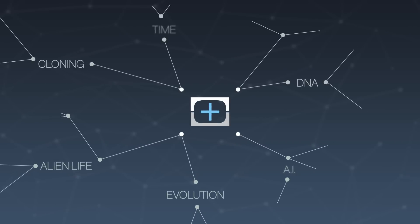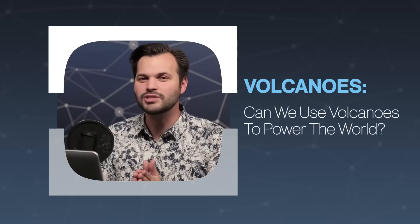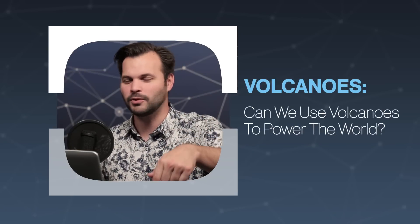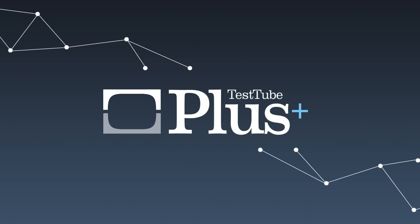Hey everyone, thanks for tuning in to TestTube Plus again today. I'm Trace. This is episode 4 of 5 on volcanoes. If you haven't subscribed yet, just take a second and click the little button down there. Also, go back and watch the first three episodes in this series because you don't want to miss how volcanoes form, where they form, what's up with their explosions, and all sorts of cool stuff about mythology and how it informs modern science. But today, episode 4, we're talking about how volcanoes can affect everybody in the world — global effects from single eruptions.